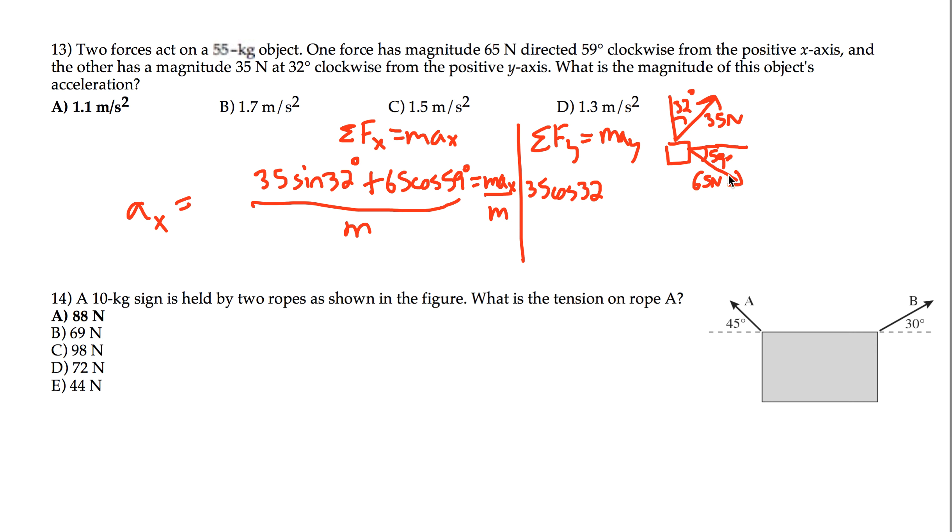And then the 65 newton has a y-component going down here, so it's negative and it's opposite the angle, so it's a sine, minus 65 sine of 59 degrees. And that's going to equal may.